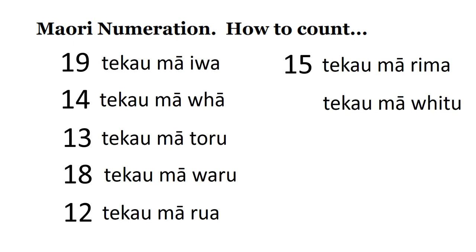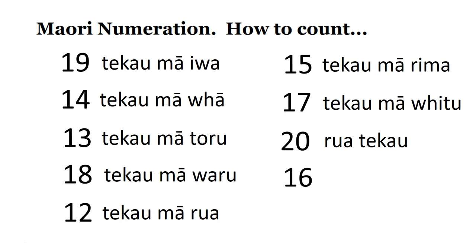What's te kau mā fitu? What would that be in English? 17. How do we say number 20? Rua te kau — so 2 tens. Number 16: te kau mā ono. Number 11: te kau mā tahi.